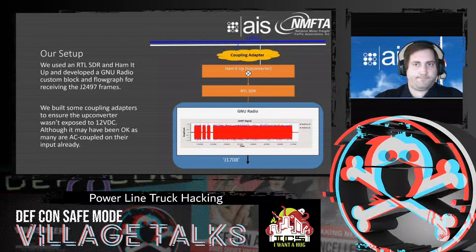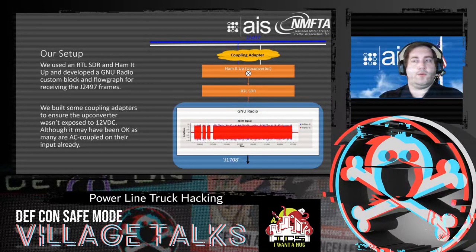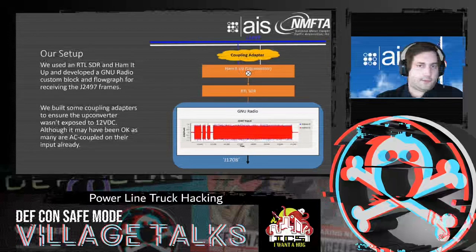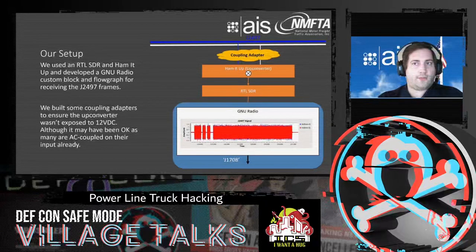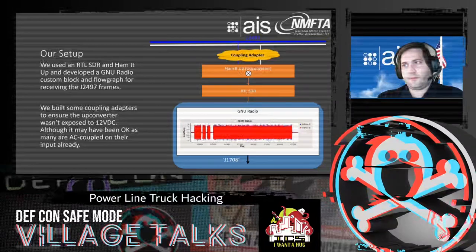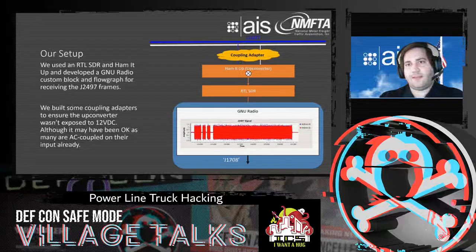In our setup, when tapped to the line we used a coupling adapter to remove the 12-volt DC offset — to be safe and avoid damaging the upconverter. The output of the upconverter went to the RTL SDR, sampled and filtered in GNU Radio, producing a J1708-looking message. Note how the preamble has visible silent periods and the body is the continuous section at the end of the message.